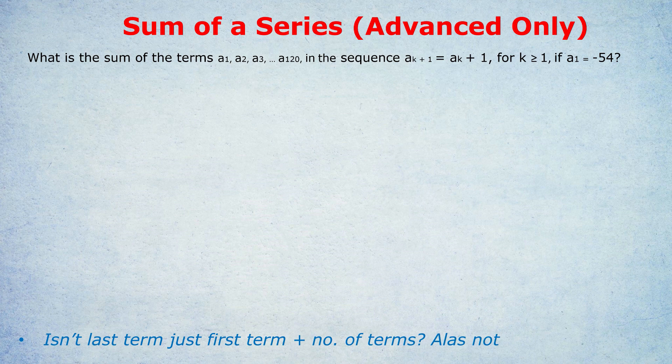So minus 54, minus 53, minus 52, etc. And there are 120 terms in this sequence. Now I'm sure by now you've memorized the formula about middle term and number of terms. And clearly we have the first term in the sequence being minus 54. The challenge is going to be to find the last term. We know that there are 120 terms in this sequence, and we know that it begins with minus 54, and we know it goes up by 1 each time by understanding sequences.